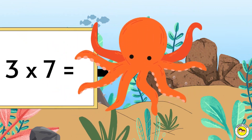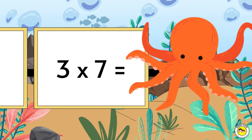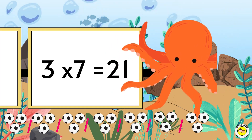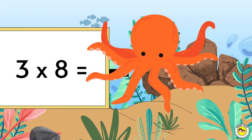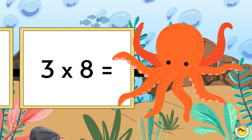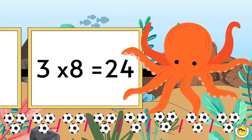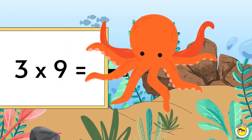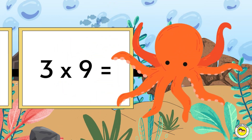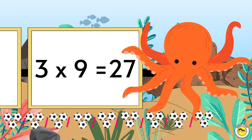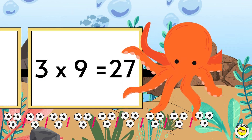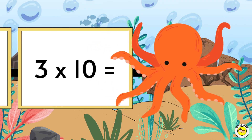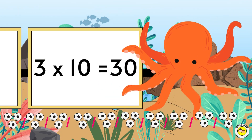Three times five equals fifteen. Three times six equals eighteen. Three times seven equals twenty-one. Three times eight equals twenty-four. Three times nine equals twenty-seven. Three times ten equals thirty.